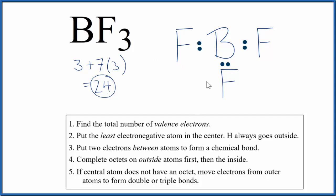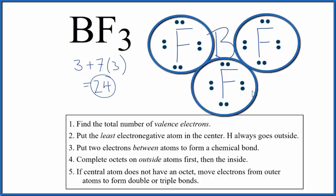Now we can complete the octets on the atoms on the outside, the fluorine atoms. So we've completed the octets for the fluorine atoms. They all have eight valence electrons. We've used all 24 of our valence electrons here.